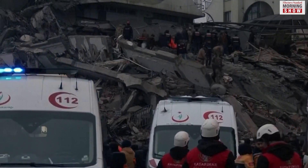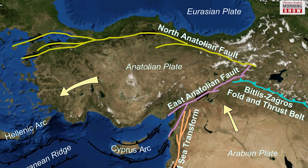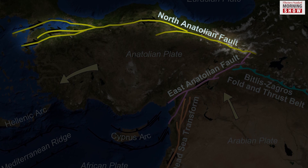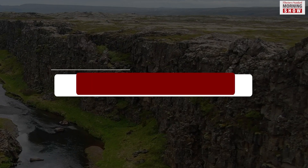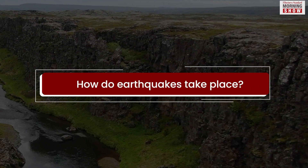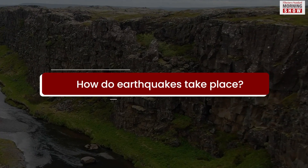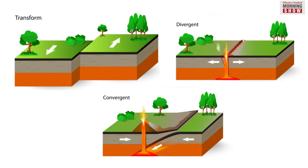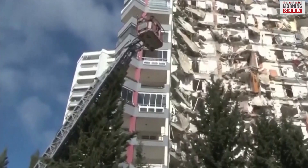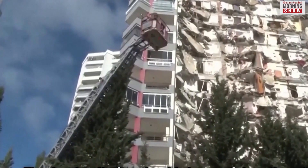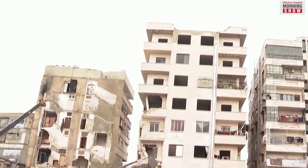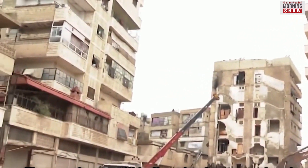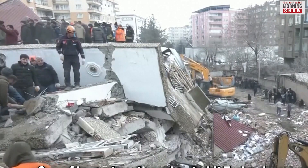Turkey sits just above the fault line between the Anatolian plate and the much bigger Eurasian plate. It has two major faults: the North Anatolian and the East Anatolian. Earthquakes occur when two tectonic plates slide past each other, move away from each other, or one slides over another. Turkey's earthquakes are generally caused when the Anatolian plate slides past the Eurasian plate.